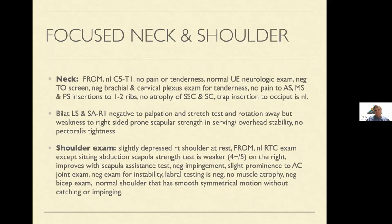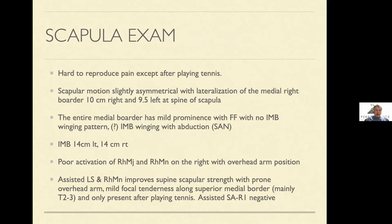My physical exam shows essentially a normal neck. The bilateral levator scap and serratus anterior at the first rib were negative to palpation and stretch tests, which is an important component of a complex examination. Her shoulder exam is pretty normal other than weakness in the prone position with her arm overhead straight out — she's weak on the right versus the left if you try to push it toward the floor. Her scapula is slightly lateralized: 10 centimeters on the right from midline versus 9.5 on the left — a very subtle but significant change.